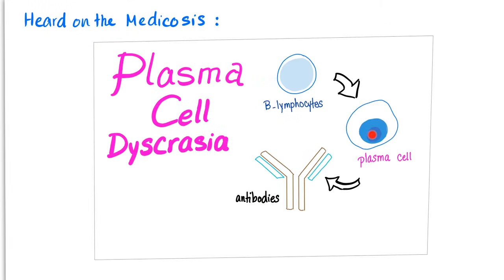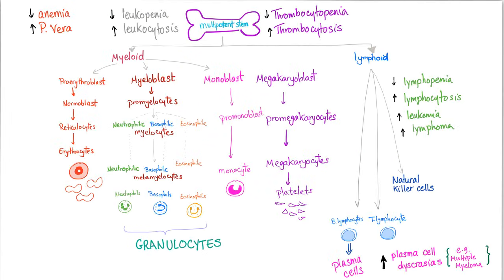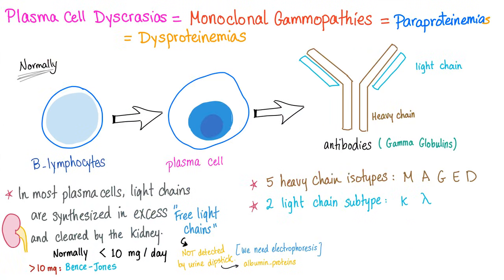B-lymphocytes become secreting plasma cells that secrete antibodies. When this process gets out of control, we end up with cancer. An increase in number of plasma cells is called plasma cell dyscrasia. They are monoclonal gammopathies, such as multiple myeloma — also known as paraproteinemias and dysproteinemias.